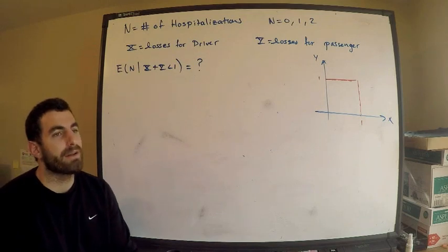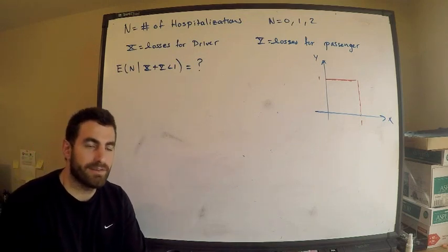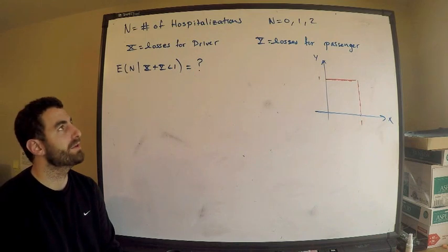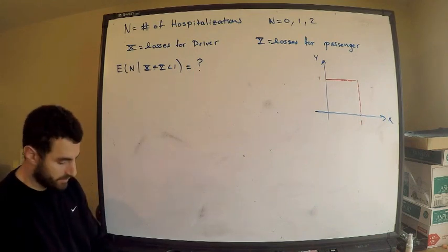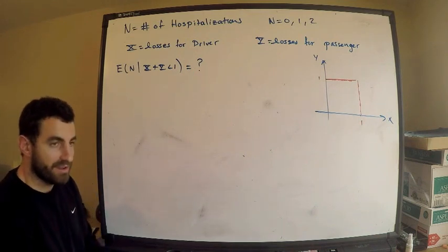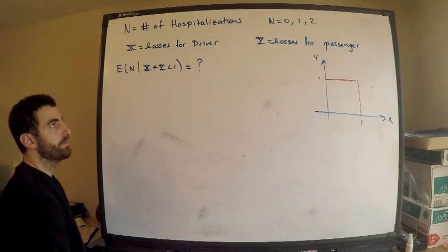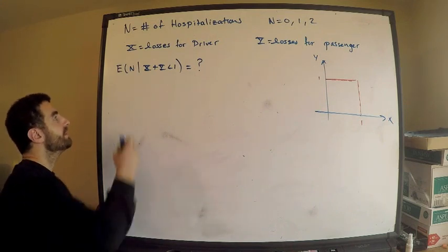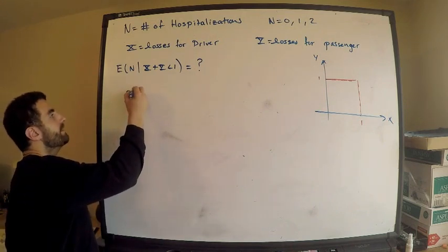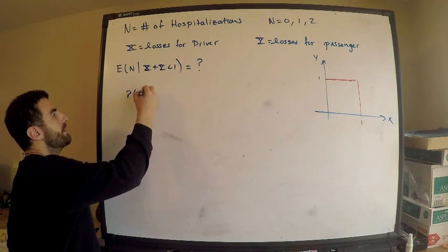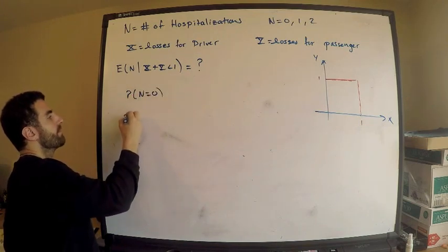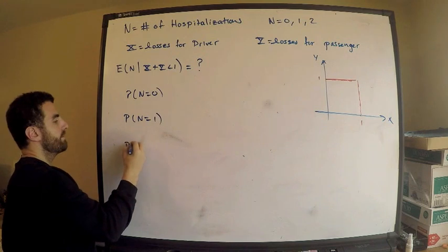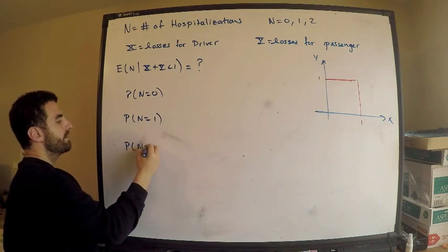If you think about it, we have a passenger and a driver in a car accident, so what are the possible number of hospitalizations? We could either get no people in the hospital, one person, or two. We need to compute these particular probabilities: probability N equals zero, probability N equals one, and probability N equals two.